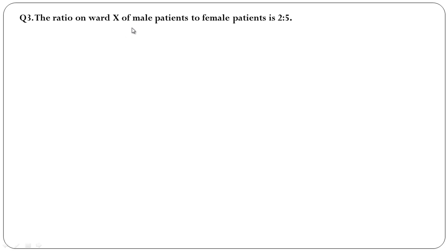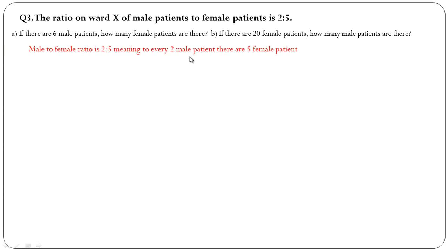Question number three: The ratio on ward X of male patients to female patients is 2 to 5. (a) If there are 6 male patients, how many female patients are there? (b) If there are 20 female patients, how many male patients are there? Male to female ratio is 2 to 5, meaning for every 2 male patients there are 5 female patients.